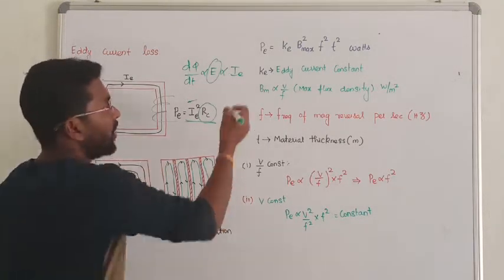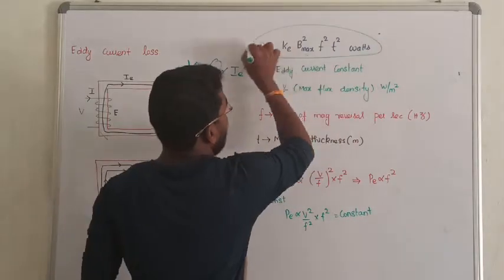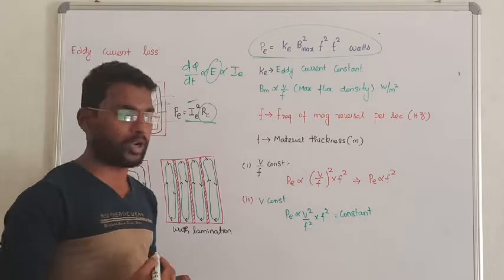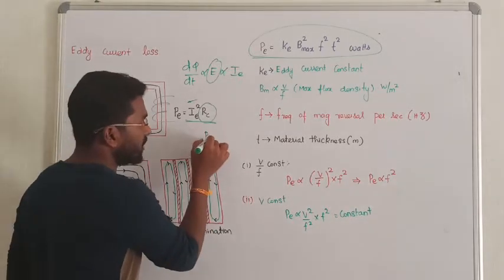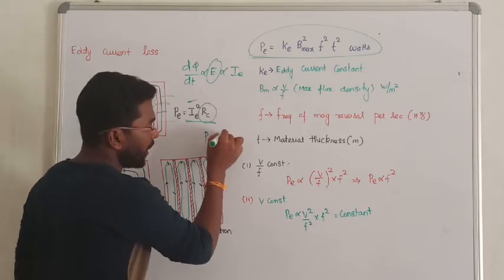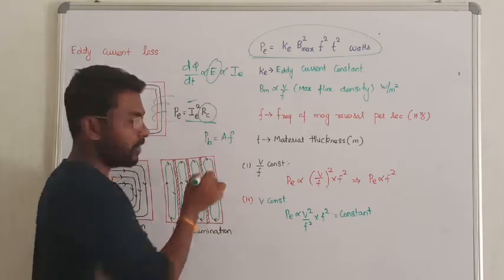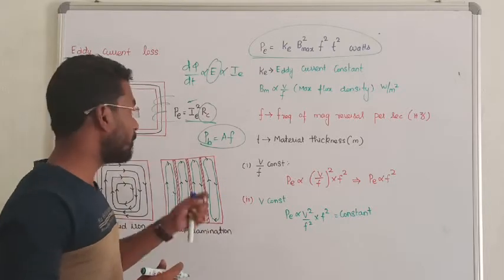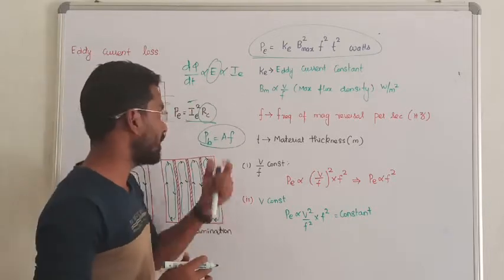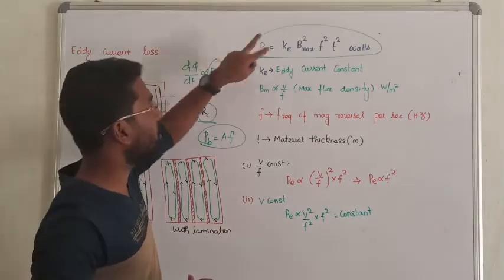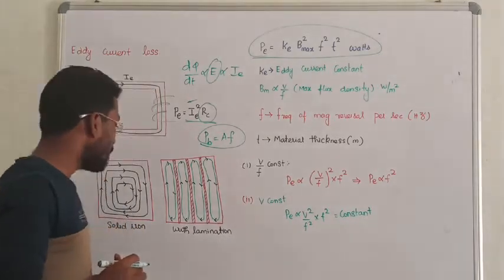So instead of going in this way, we are using a standard formula to calculate the eddy current loss in the transformer. Like hysteresis loss, we can calculate the hysteresis losses with the help of hysteresis curve. But practically, we have been using some standard equation to obtain the value of eddy current loss. This is the general formula to obtain the value of eddy current loss.